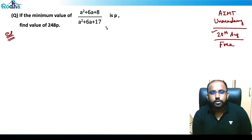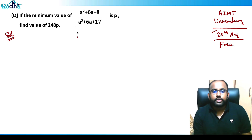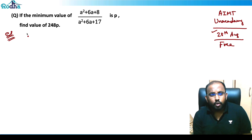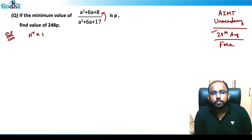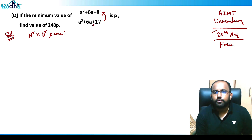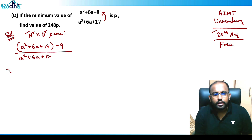This question was asked in the last AIMT: what is the minimum value of (a² + 6a + 8) / (a² + 6a + 17)? Its minimum value is p — find 248p. The key idea for such questions is to make the numerator and denominator the same. I rewrite the numerator as (a² + 6a + 17) - 9, so the expression becomes (a² + 6a + 17 - 9) / (a² + 6a + 17).